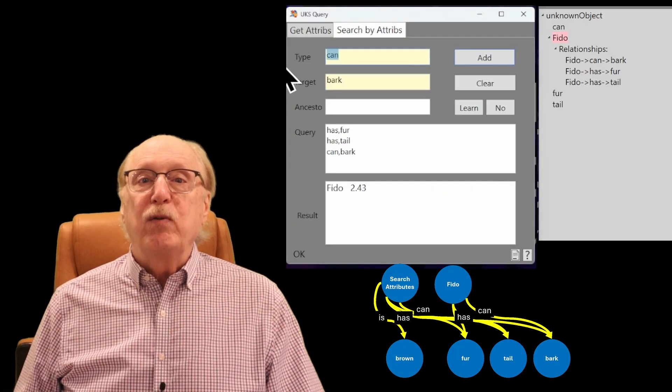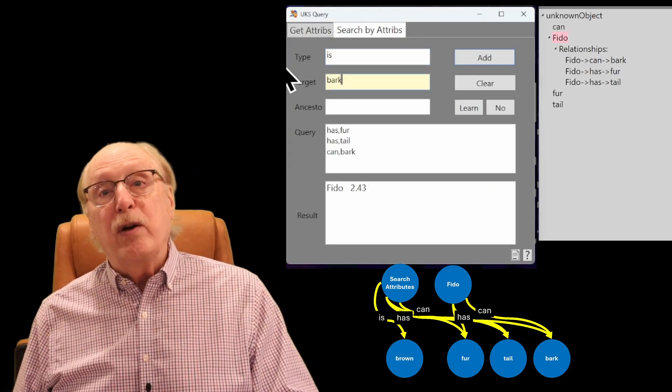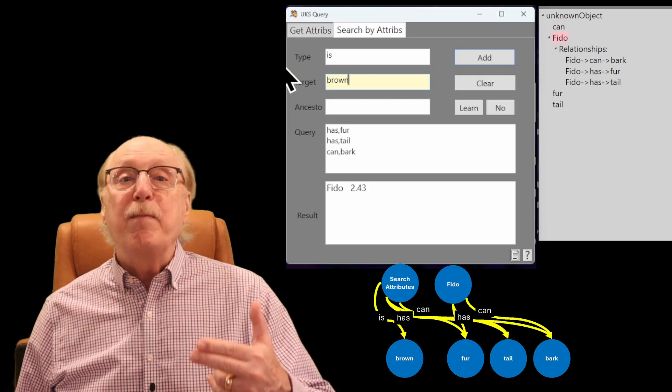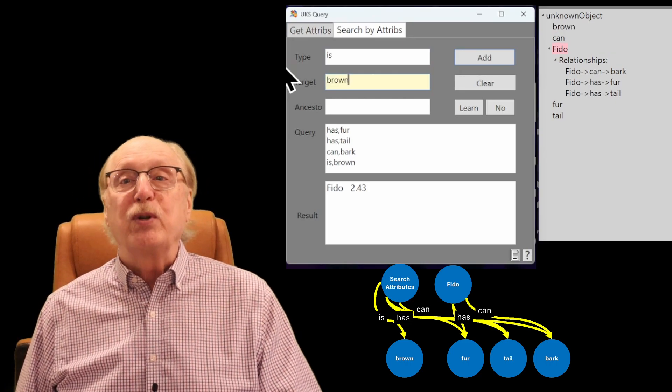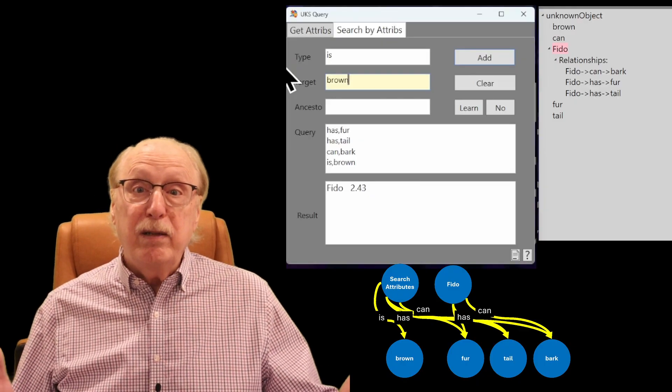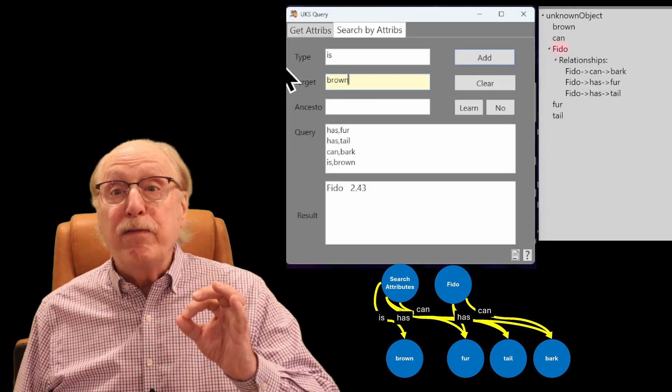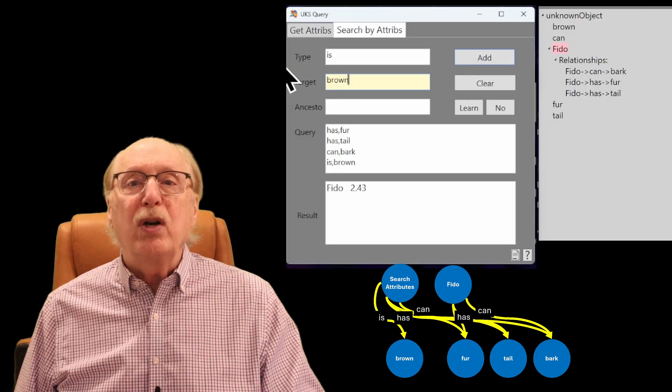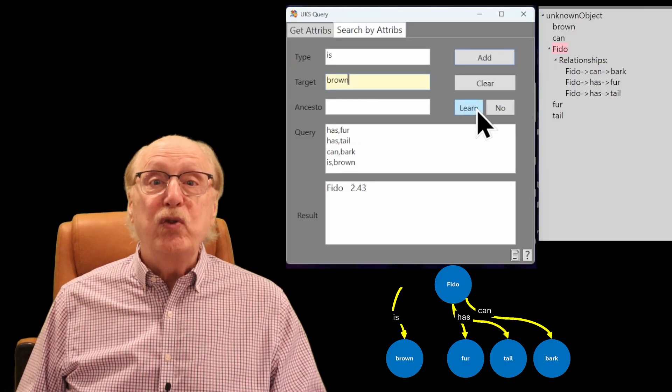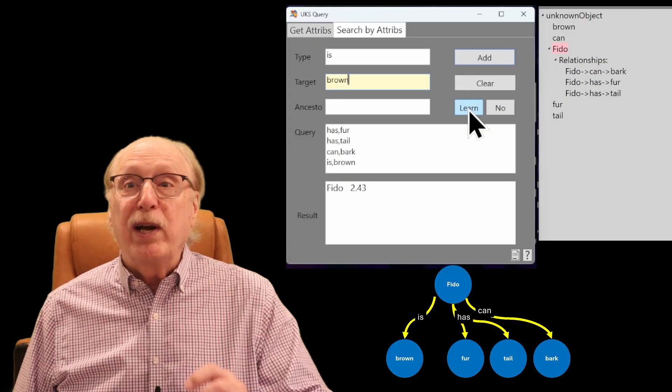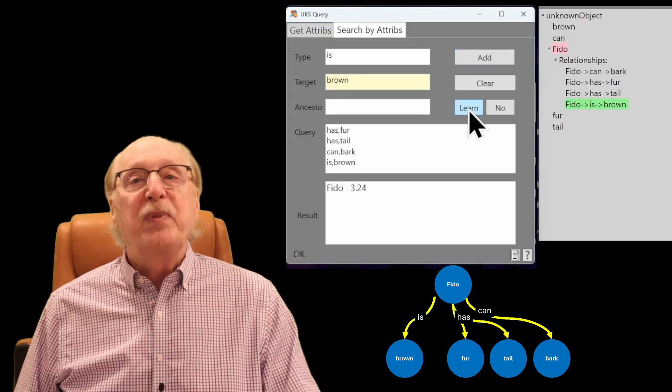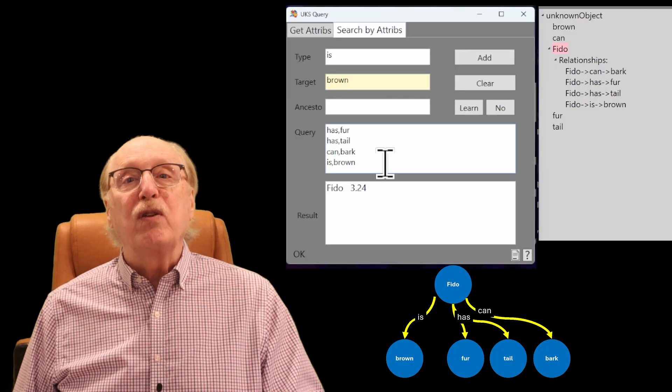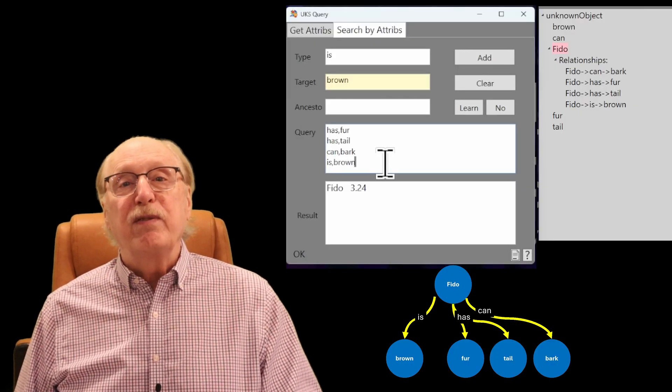It's shown in the graph display highlighted in pink. Later, you observe that Fido is brown. When you encounter this new attribute, the system again searches for the node that best matches the current set of perceptions: fur, a tail, barks, and finds the Fido node. The match is not perfect, but is strong. So when directed, the system adds a new attribute, is brown, to the same node. The knowledge structure grows richer, but it still represents a single specific instance.